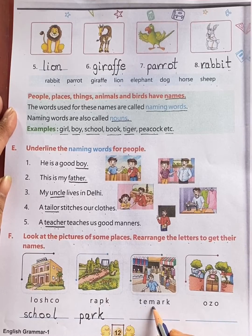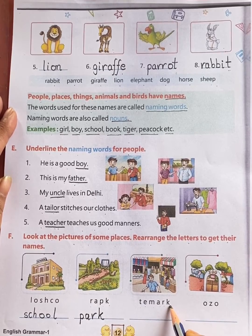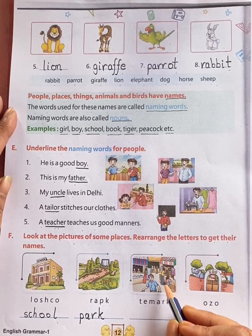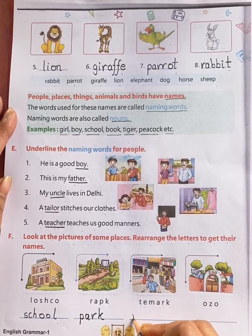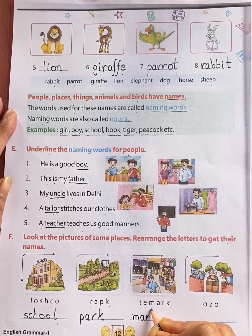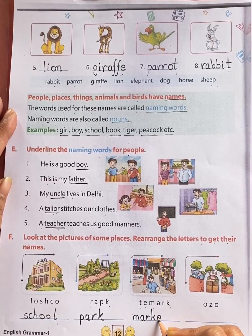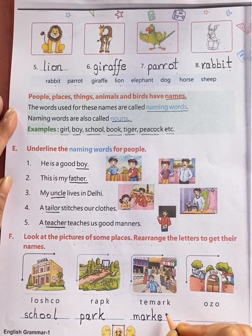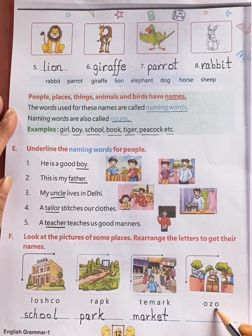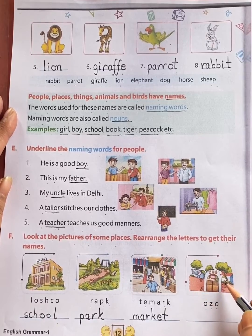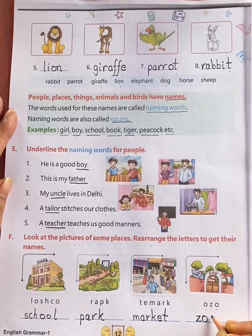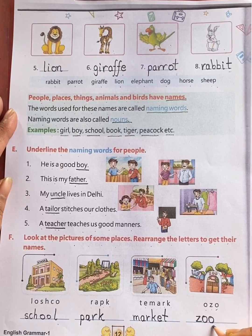T-E-M-A-R-K — see the picture. This is market. The name of the place is market. Let's arrange the letters M-A-R-K-E-T, market. O-Z-O — see the picture. This is zoo. Let's arrange the letters Z-O-O, zoo. The name of the place is zoo.